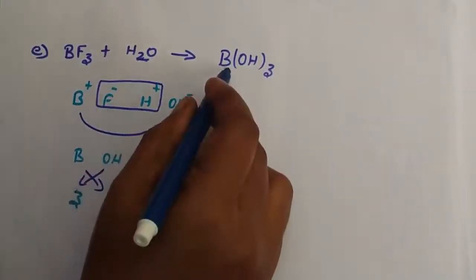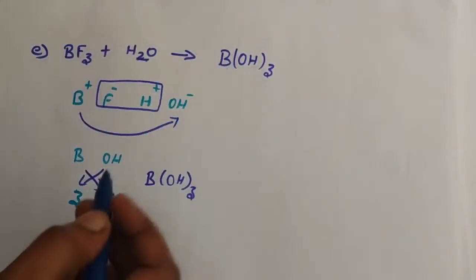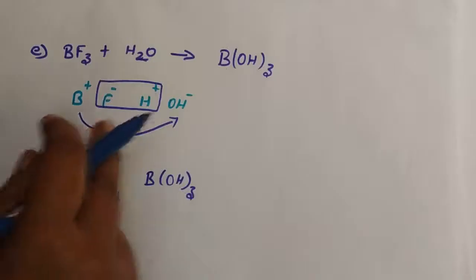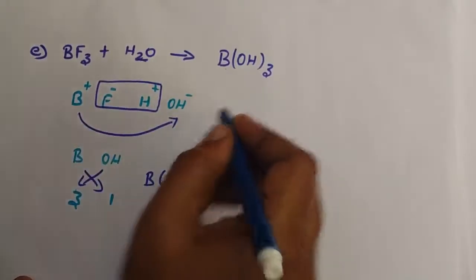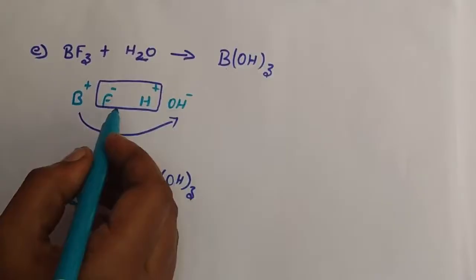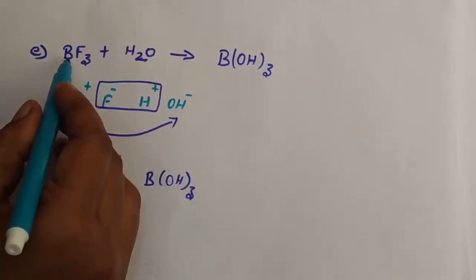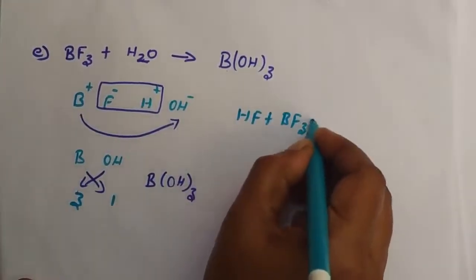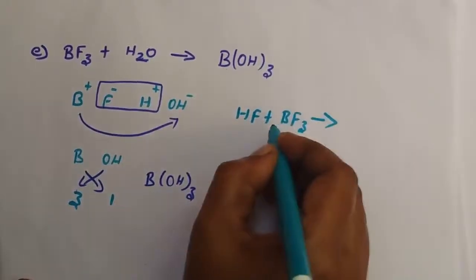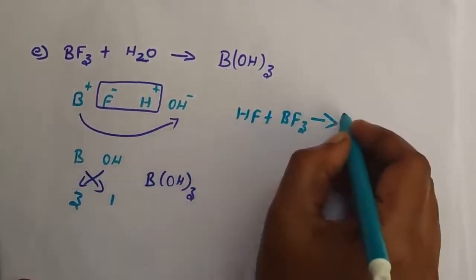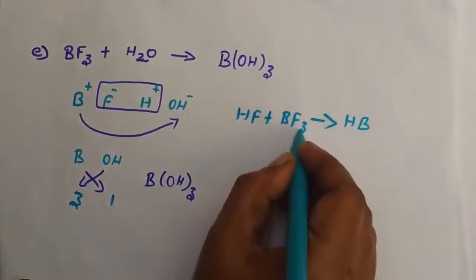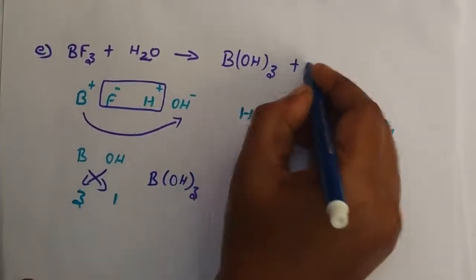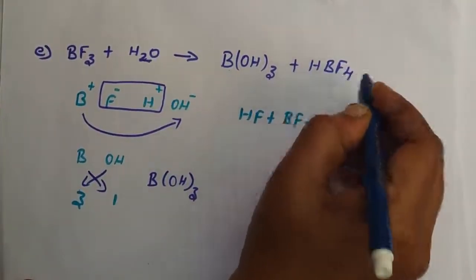H plus and F minus form hydrogen fluoride HF. However, HF is not the direct product — hydrogen fluoride reacts with 1 mol of BF3 to give H2BF4, and that gives HBF4 (tetrafluoroboric acid) as the other product. So the products are B(OH)3 and HBF4.